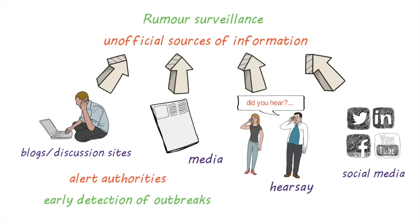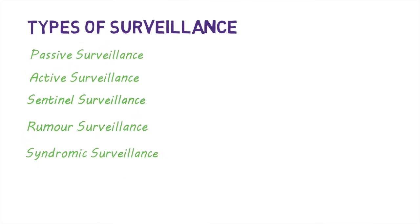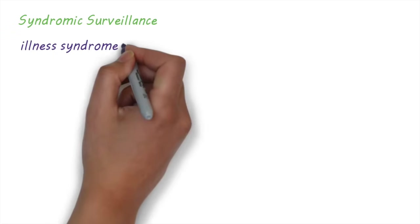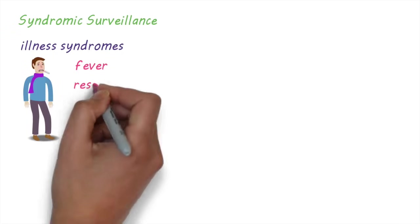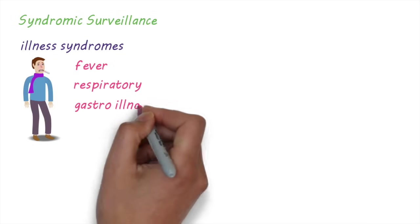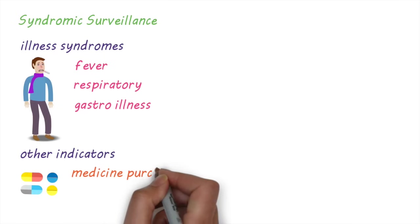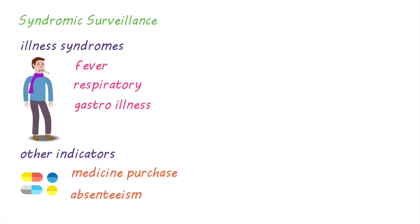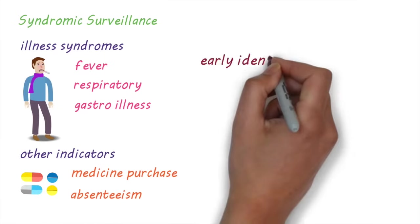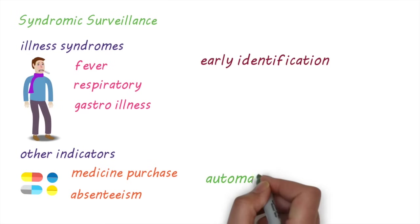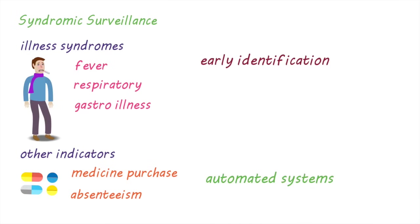The next type of surveillance is syndromic surveillance. This involves monitoring nonspecific syndromes like presentations for fever, respiratory, or gastrointestinal illness, or other indicators that might highlight illness, like the purchases of medicine or absenteeism from work or school. The aim is to allow early identification of clusters of illness before diagnoses are confirmed and reported to public health agencies. Syndromic surveillance usually relies on automated electronic methods.